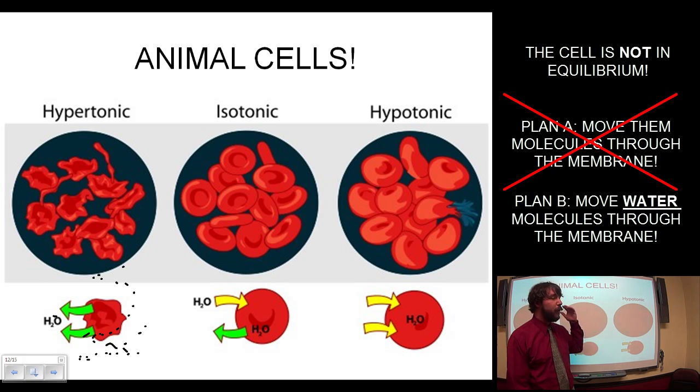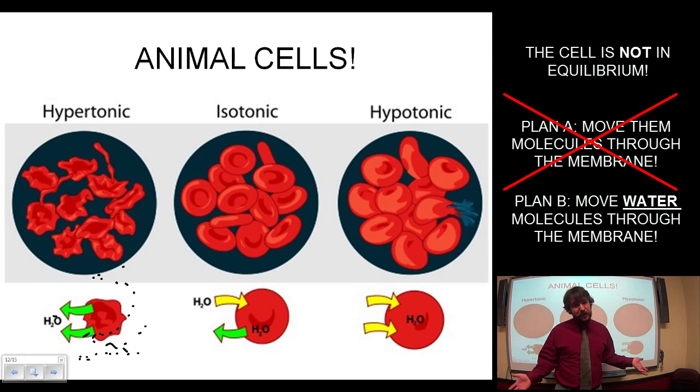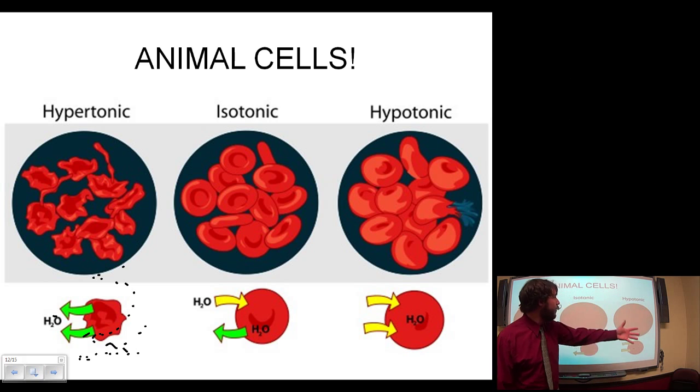In a hypotonic solution, it's the opposite. The concentration around the cells is much lower than the concentration inside the cells. So water will enter the cell by osmosis. Water will enter the cell to try and equal out the concentrations. And this can be dangerous because the cell will bloat and get larger. And unlike you at Thanksgiving where you just get a little uncomfortable, they could actually burst. They could lyse. They could die. That's not good.